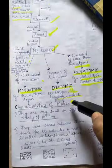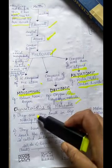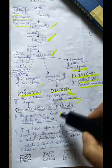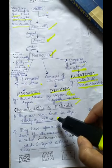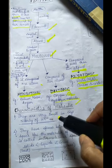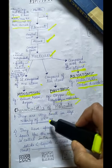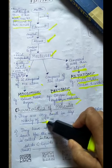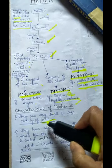What are the characteristics of molecules? They are very small in size — they cannot be visible with the naked eye. They are nearly of the size 10 raised to the power minus 10 meters.